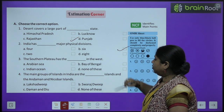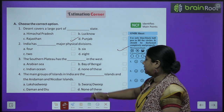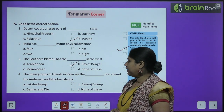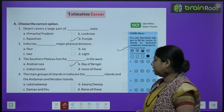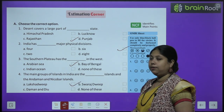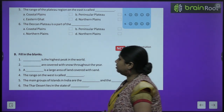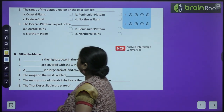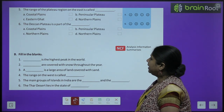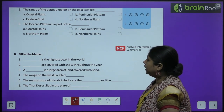Third question: the southern plateau has what in the west? Arabian Sea is the correct answer. Fourth: the main group of islands in India are the Andaman and Nicobar Islands and which other? Lakshadweep Islands. Fifth: the range of the plateau region on the east is called — Eastern Plains, Coastal Plains, Eastern Ghats, Peninsular Plateau, or Northern Plains? So, plateau region ko hum bolte hain Eastern Ghats.